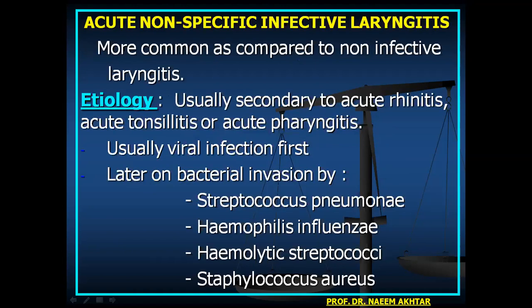Acute non-specific infective laryngitis is more common compared to non-infective laryngitis. It is usually secondary to acute rhinitis, acute tonsillitis, or acute pharyngitis. Usually viral infection occurs first, followed by bacterial invasion — for example, Streptococcus pneumoniae, Haemophilus influenzae, hemolytic streptococci, and Strep aureus.